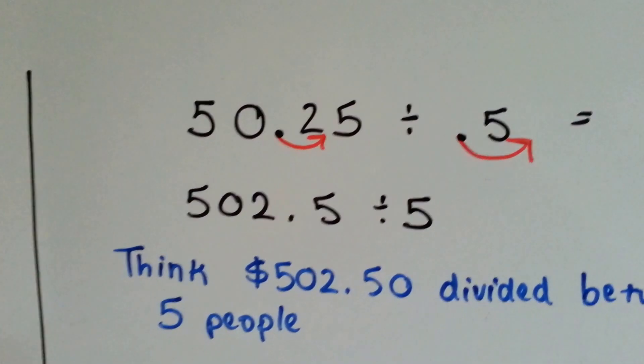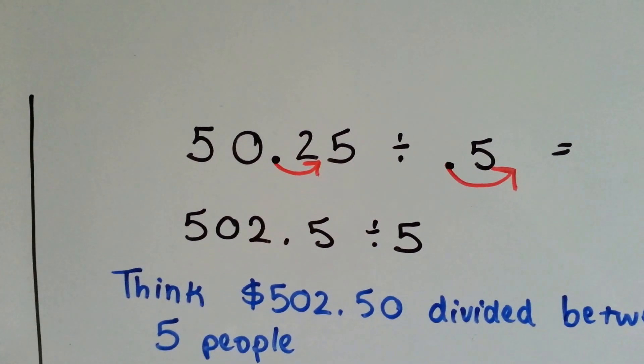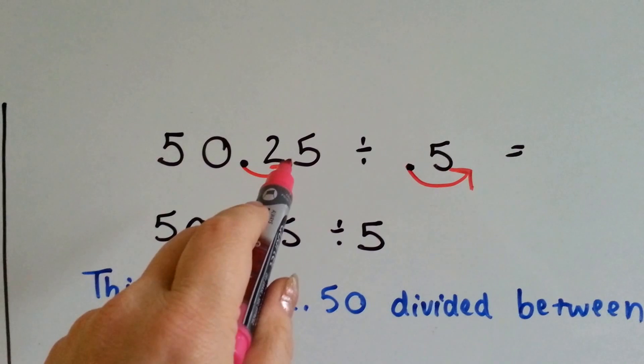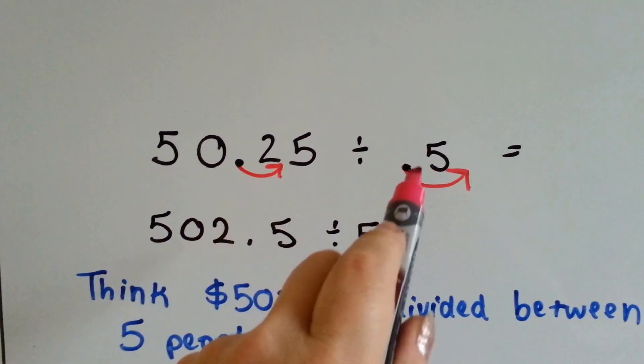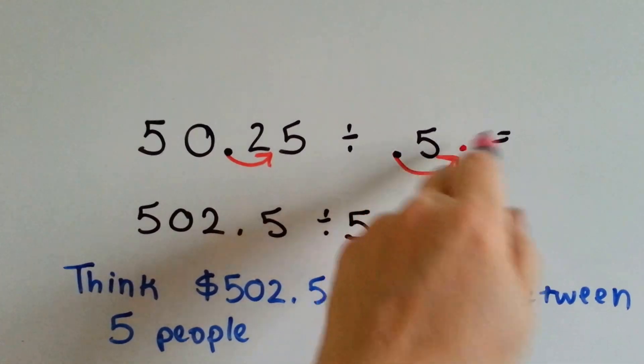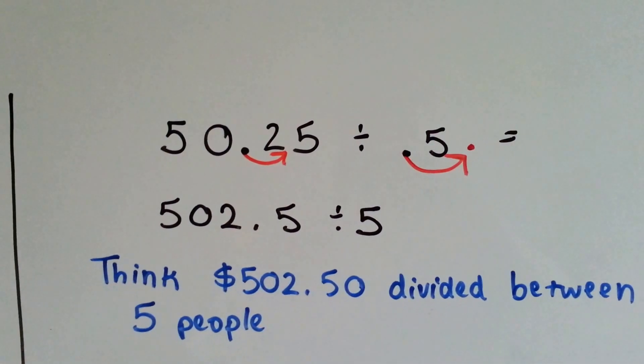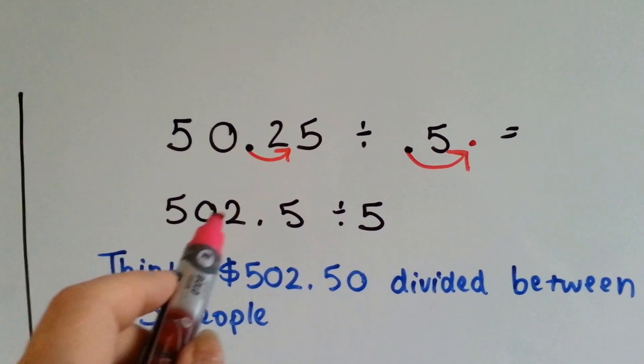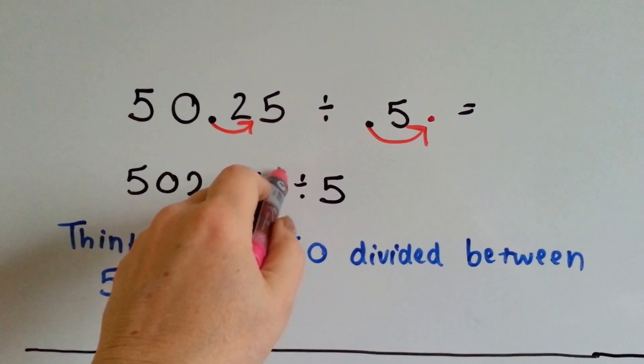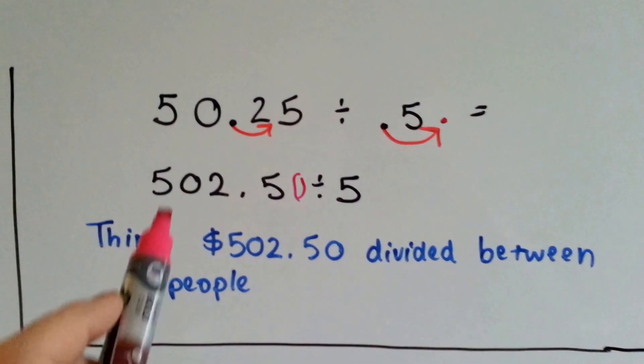If we have $50.25 divided by $0.50, we could just move the decimal point over in between the two and the five, and it moves it away from the five, because it moves it behind it, so it's not even an issue now. And we end up with $502.50 divided by 5, because there's like an invisible zero here.